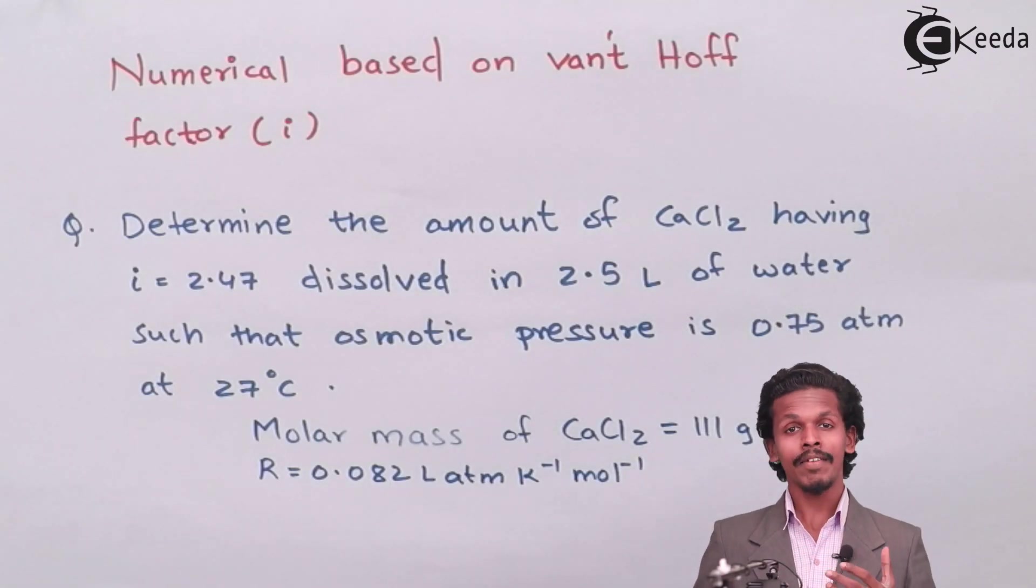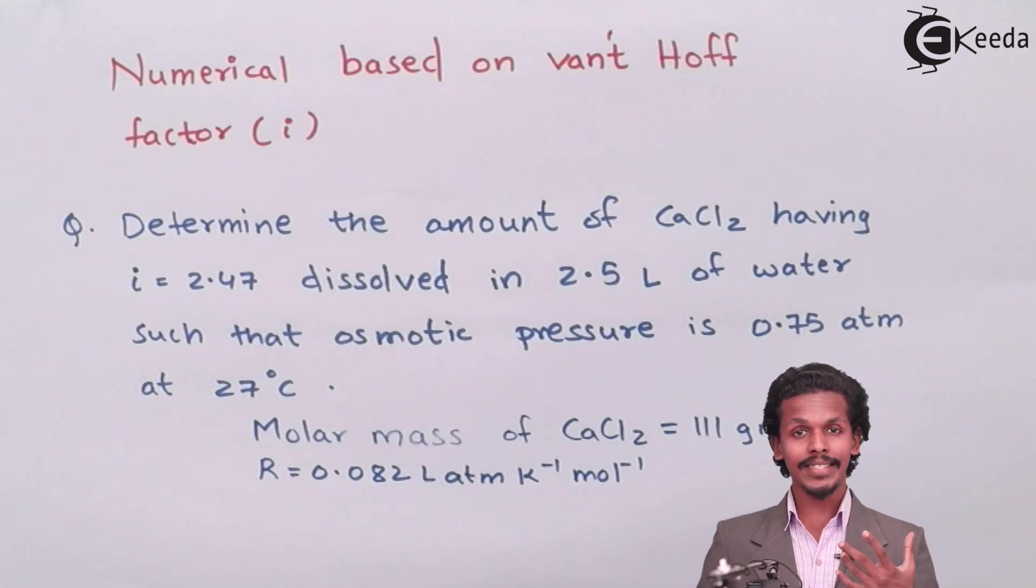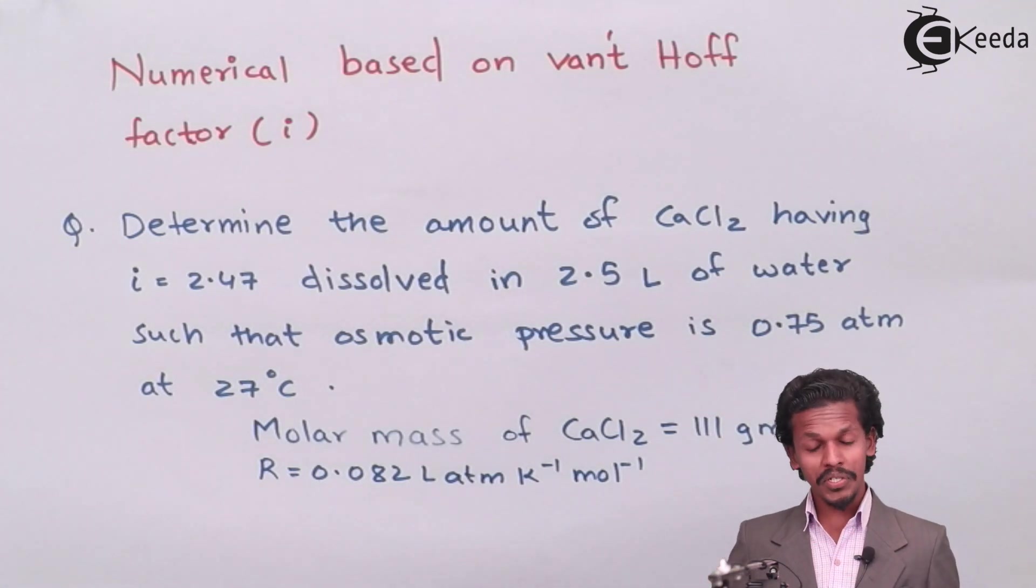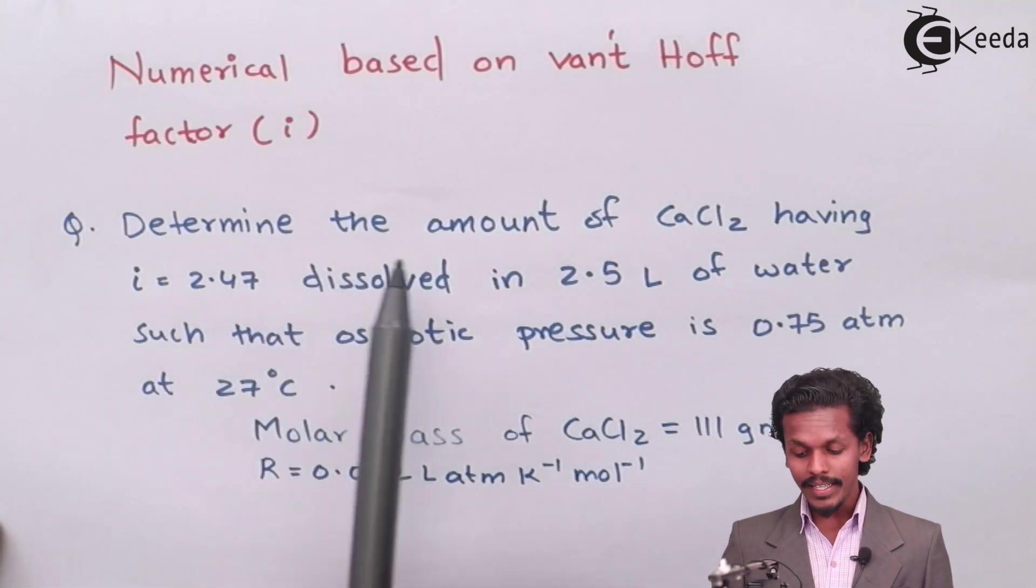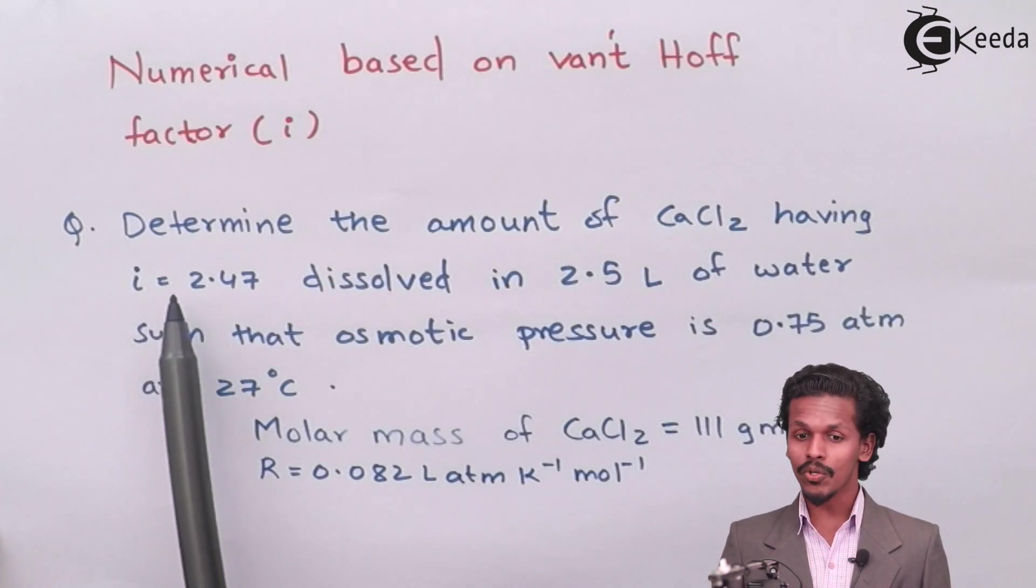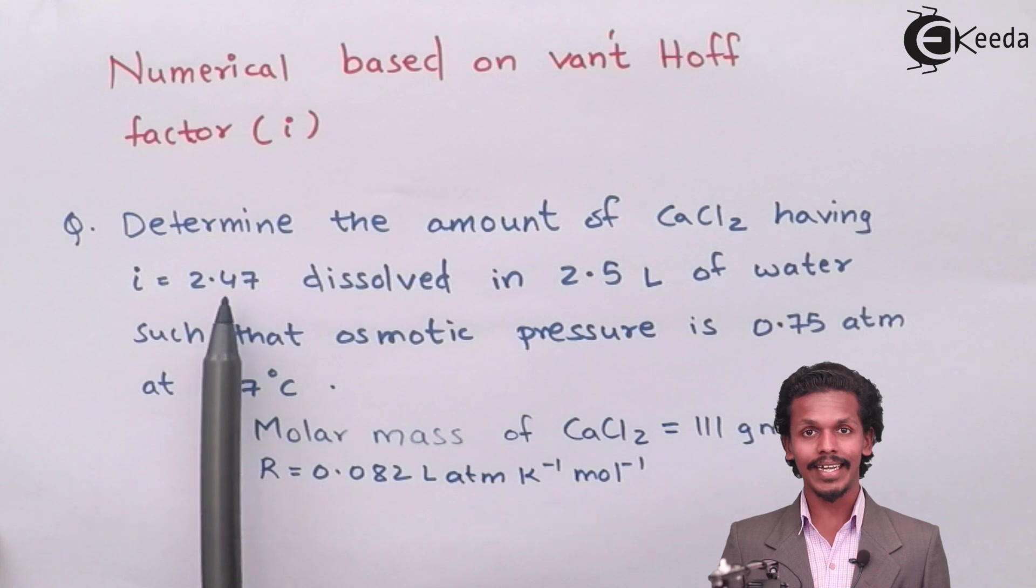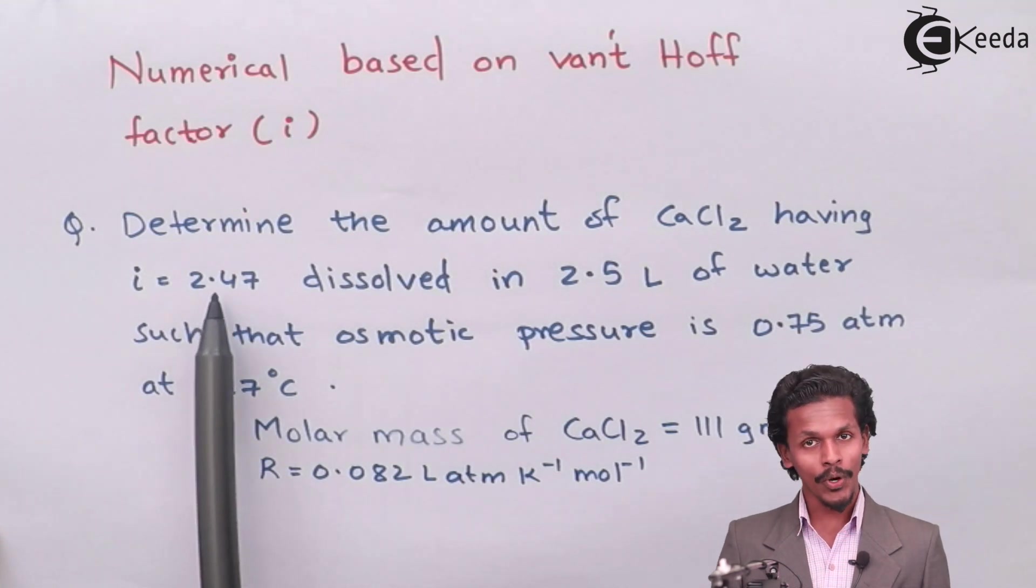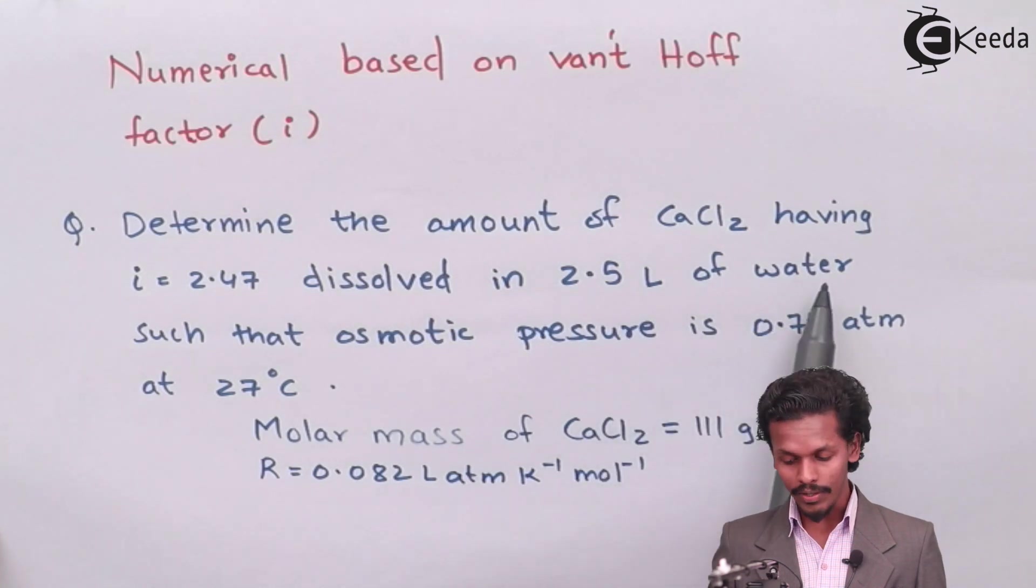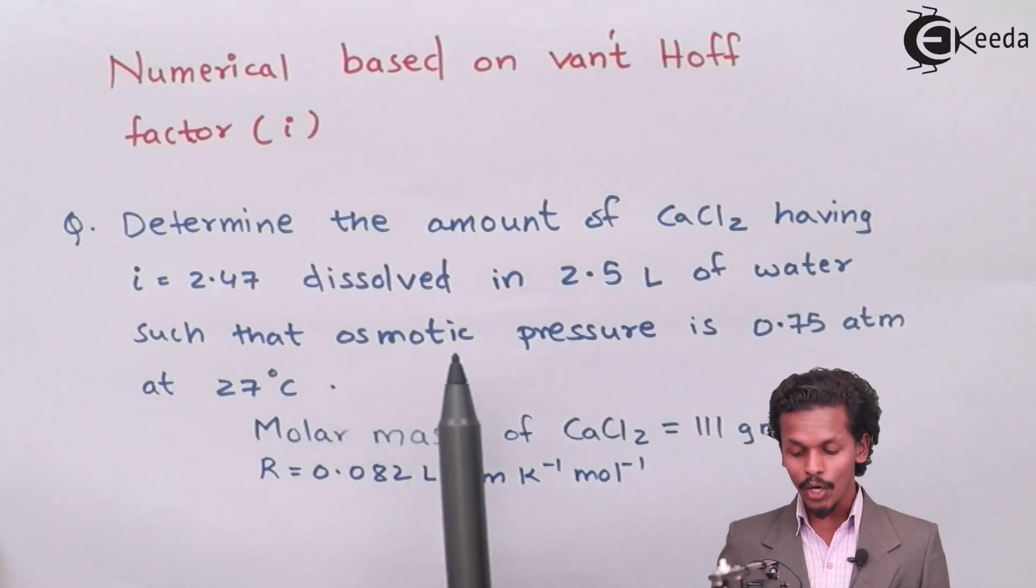So students, as given on your screen there is a numerical which is based on Van't Hoff factor. So let us see what are the given data and what is the requirement of the given question. The given question is we have to determine the amount of CaCl2 having i equals to 2.47, that is Van't Hoff factor equals to 2.47, which is dissolved in 2.5 liter of water such that the osmotic pressure is 0.75 atmosphere